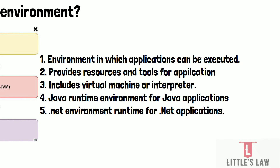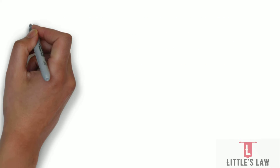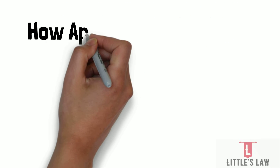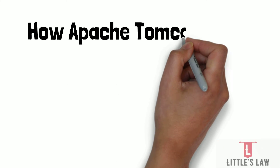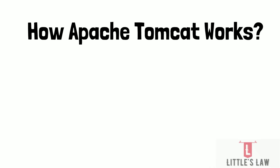Now let's move on to the crucial topic of how Apache Tomcat works. Apache Tomcat is a Java servlet container that runs on top of a JVM — a Java Virtual Machine — which provides a runtime environment in which Java-based web applications can be deployed and run.